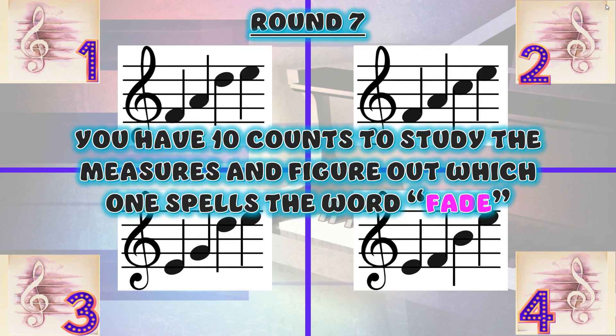Round 7. You have 10 counts to study the measures and figure out which one spells the word 'fade.'